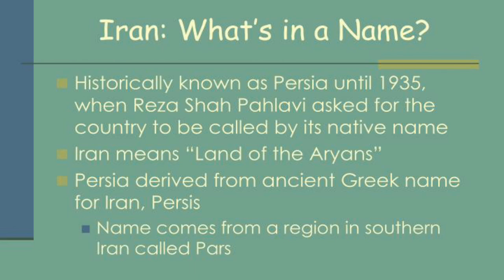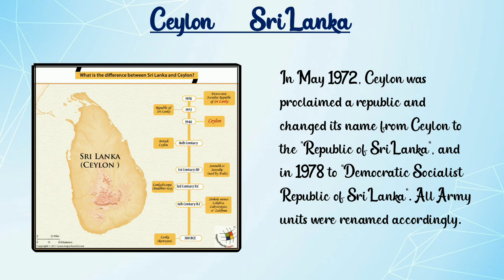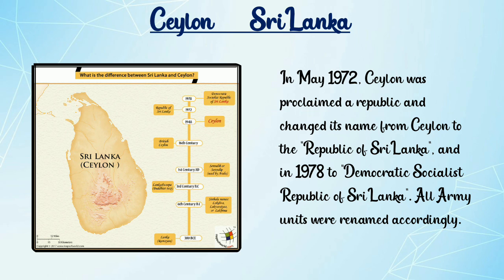Now we are going to learn the next slide. Ceylon is now Sri Lanka. Here we can see a map of Sri Lanka or Ceylon. In May 1972, Ceylon was proclaimed a republic and changed its name from Ceylon to the Republic of Sri Lanka, and in 1978 to the Democratic Socialist Republic of Sri Lanka. All army units were renamed accordingly.